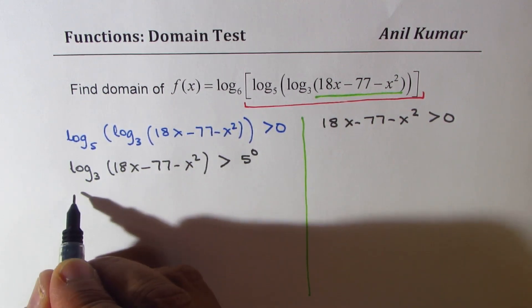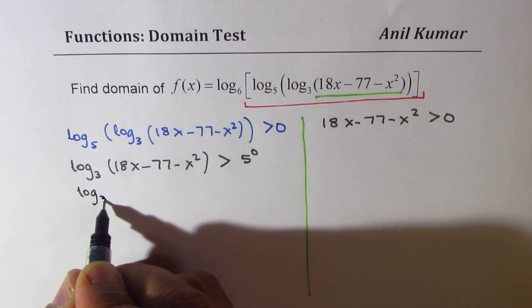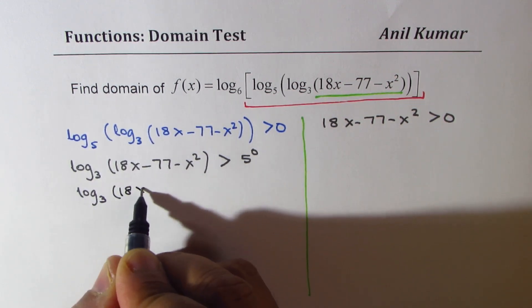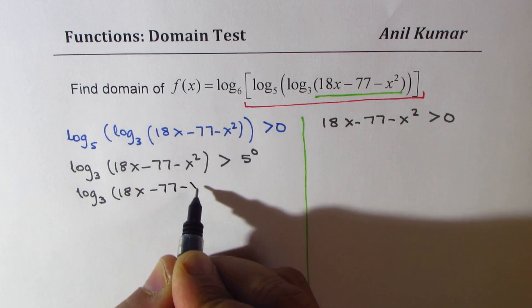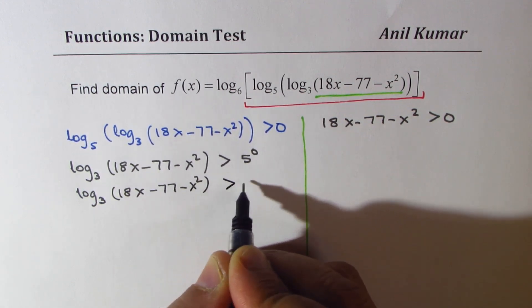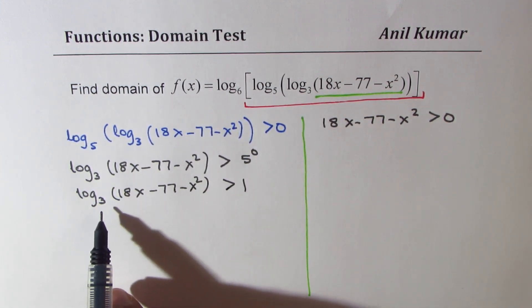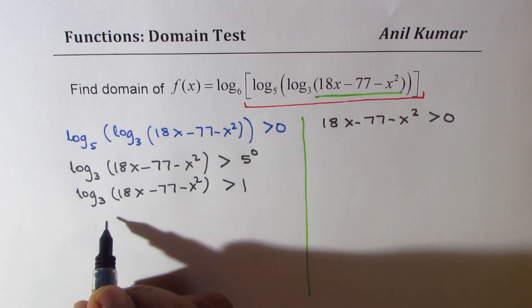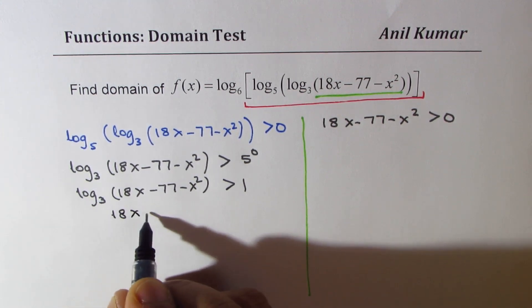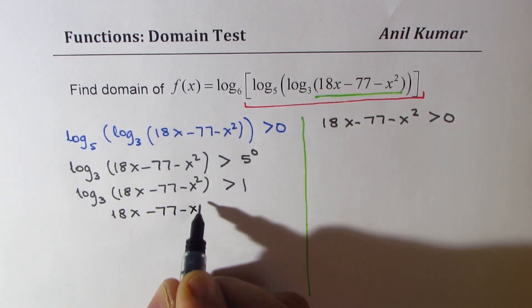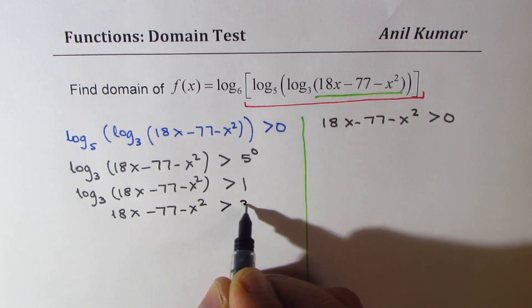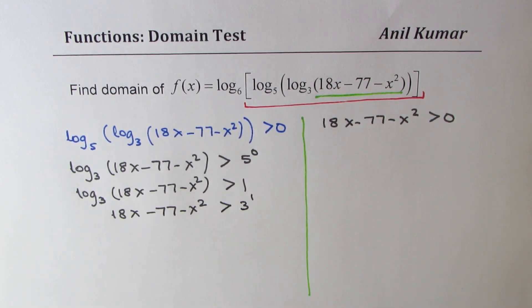Anything to the power of 0 is 1. So we get log base 3 of 18x minus 77 minus x squared should be greater than 3 to the power of 1 which is 3.